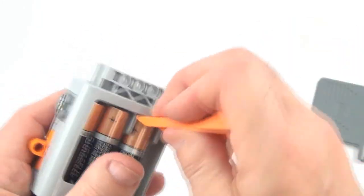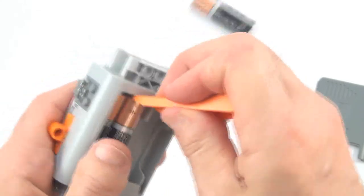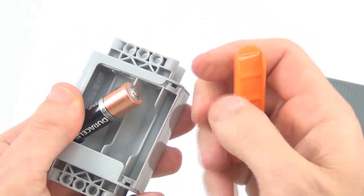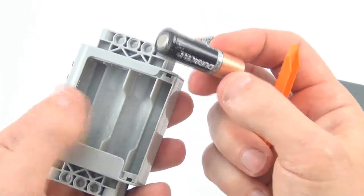So just use your brick separator to pull all those out, very simple, very easy. Even that last battery, which is quite often very hard to get out of a battery box, still comes out fairly easily.